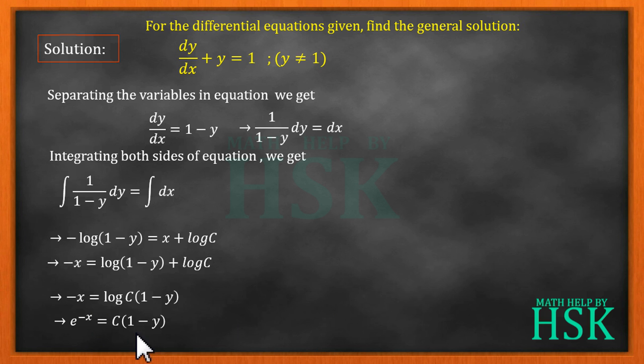And further I can write 1 upon c into e to the power of minus x is equal to 1 minus y, or y is equal to 1 plus A times e to the power of minus x, because A is substituted as equal to minus 1 upon c. So this is my required general solution for this differential equation.